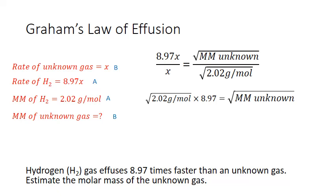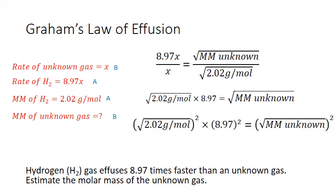I want to get rid of the square root terms next, so I square. But I have to square the entire equation. So that means I also square the 8.97.